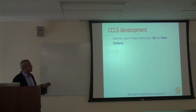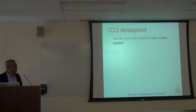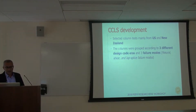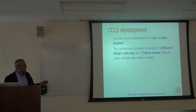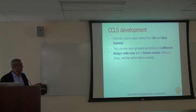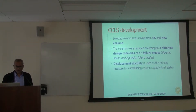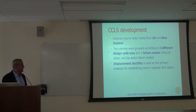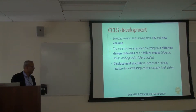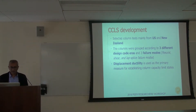A little more about the database itself. These are selected column tests primarily from the U.S. and some from New Zealand. The columns were grouped into three different design code eras and three failure modes. We had flexure, shear, and in some of the older columns, something called a lap splice failure — because they used to lap the longitudinal reinforcement right at the base. The decision was made that displacement ductility would be used as the primary measure for establishing these limit states.